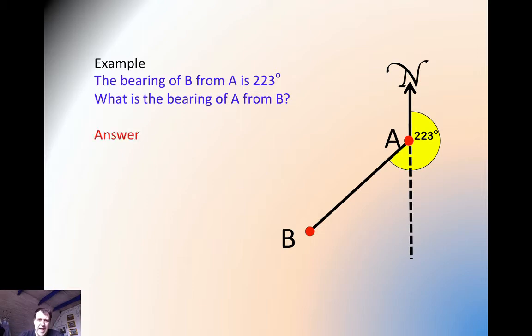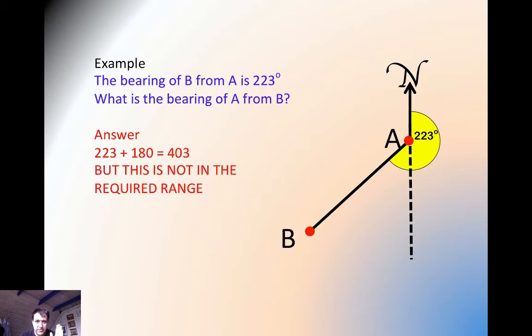Now if we add 180, we get 403, and 403 is no good to us because it's not in the range from 0 to 360. So the correct answer must be obtained from subtracting 180. 223 minus 180 is 43.